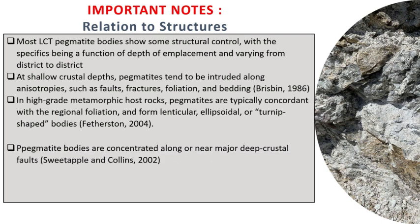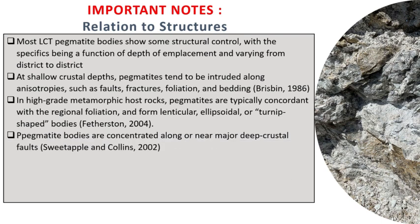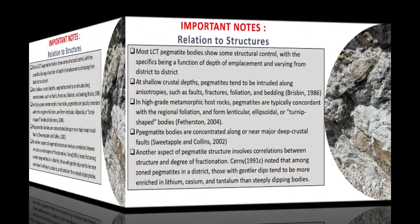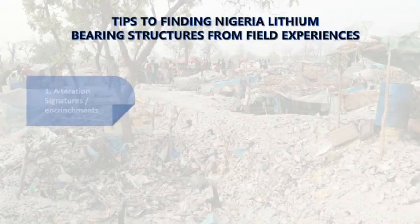High-grade metamorphic host rocks of pegmatites are typically concordant with regional foliations and they form lenticular and episodic bodies. Fourth, pegmatite bodies are emplaced along or near major deep crustal faults. Finally, another aspect of pegmatite structures involves a correlation between structures and degree of fractionation — most of them are actually enriched with tantalum. These are the preceding notes you need to know relating to structures.